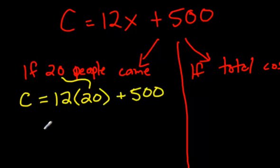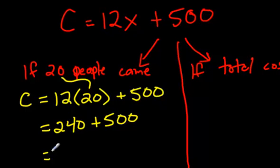So if you do that on your calculator, 12 times 20, you get 240. And then just add those numbers up. It's going to cost, and you could put a sentence if you were doing this for real here. You could say, it will cost $740 to rent the hall if 20 people show up.